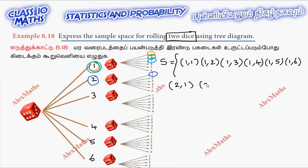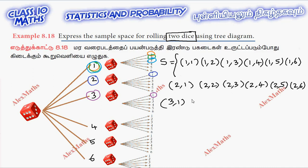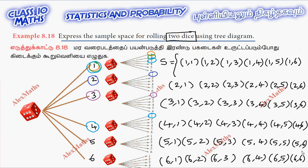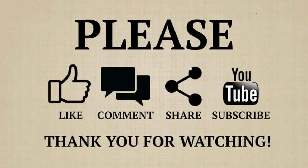Branch six: 1, 2, 3, 4, 5, 6. Completing the tree diagram, each branch of the first die leads to outcomes 1, 2, 3, 4, 5, 6 for the second die, giving a total sample space of 36 outcomes.